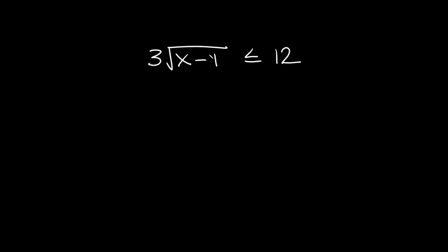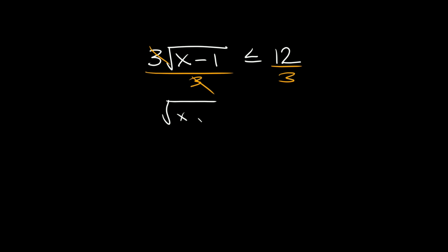We're just trying to solve for x, so let's get rid of some of this stuff. Let's get rid of the three first, so we'll divide both sides by three. Those cancel out, and then we're left with the square root of x minus one is less than or equal to four.